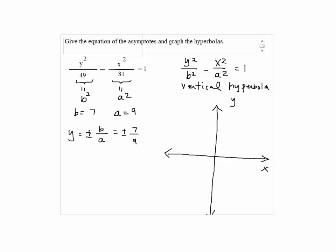We're going to draw the asymptotes. So we go up by 7, and down by 7, and go to left by 9, and go to right by 9.